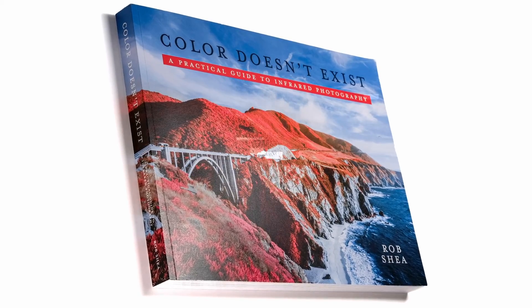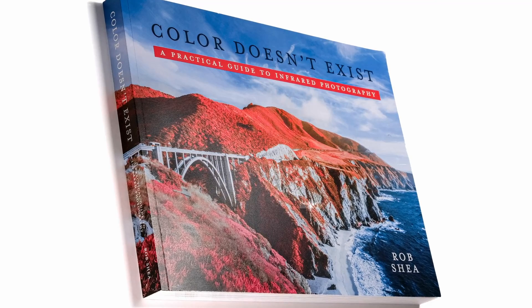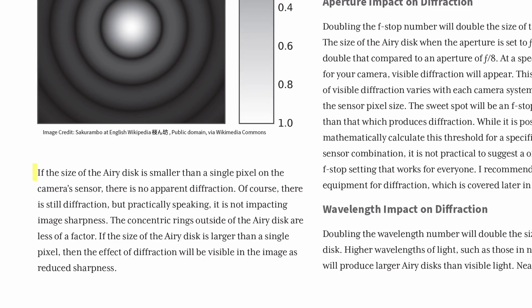First, a little backstory. In my book, Color Doesn't Exist — A Practical Guide to Infrared Photography — I said: if the size of the Airy disk is smaller than a pixel on a camera's sensor, there is no apparent diffraction. If the size of the Airy disk is larger than a single pixel, then the effect of diffraction will be visible in the image as reduced sharpness. This was a guess — an educated guess.